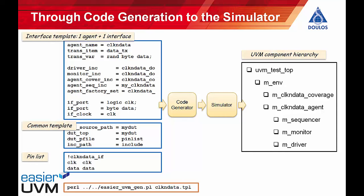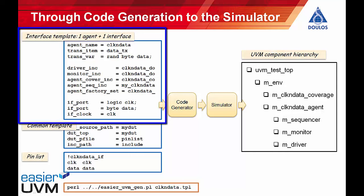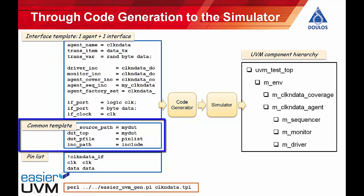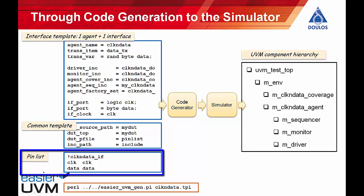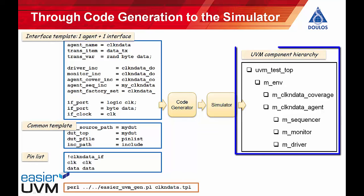The easier UVM code generator starts from a set of control files. We have a set of interface template files where each interface template corresponds to one agent and the interface that it's connected to. There's then a common template file that contains some common settings and a pin list file that describes how the pins of the design under test are connected to variables within interfaces. You then run the easier UVM code generator using a command line and the code generator generates a directory full of UVM source files that we can then simulate. When you get into your simulator you'll probably see a display in the graphical interface showing the UVM component hierarchy.